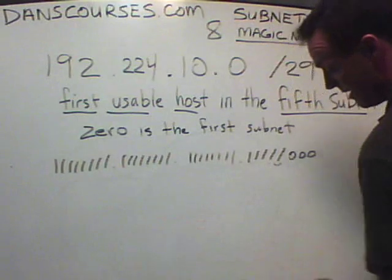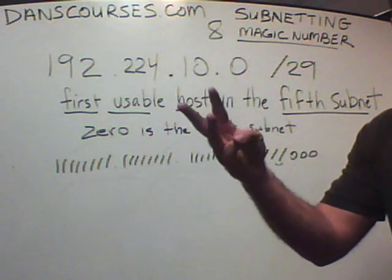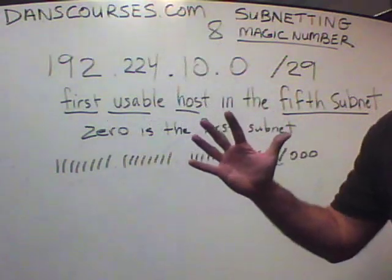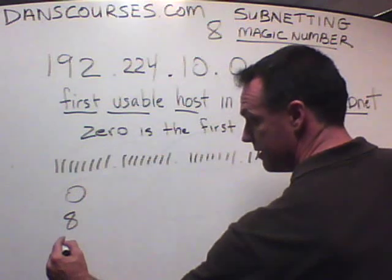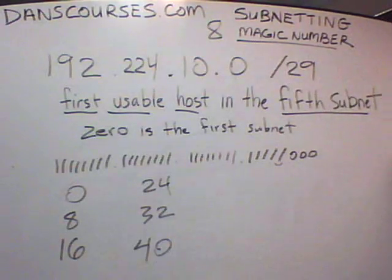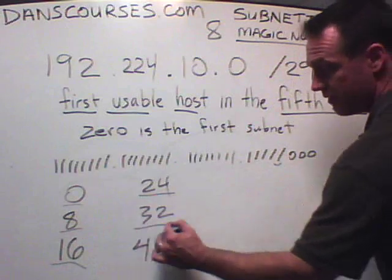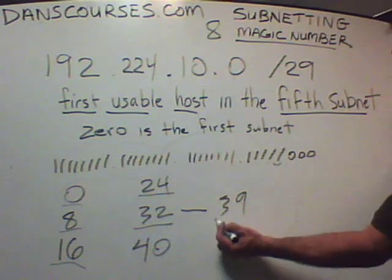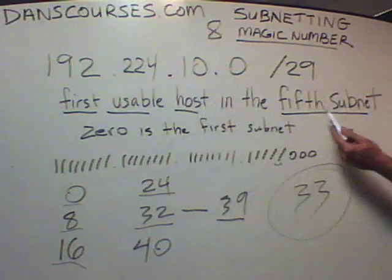Now let's answer the question. After a while, you don't even have to do all that — you just look at /29, count from 24: 25, 26, 27, 28, 29 — that's 5 bits; 128, 64, 32, 16, 8. Magic number is 8. So the networks are: 0, 8, 16, 24, 32, 40. We're looking for the fifth subnet. First is 0, second is 8, third is 16, fourth is 24, fifth is 32. The fifth subnet is 32 to 39 — 32 is the network number, 39 is the broadcast. So the first usable host is 33.